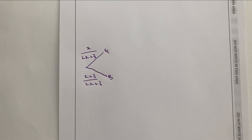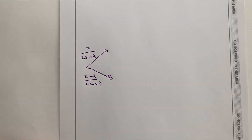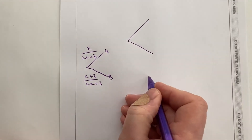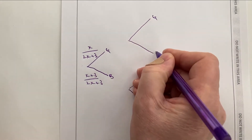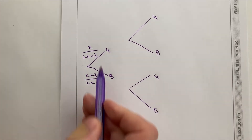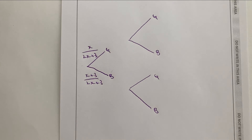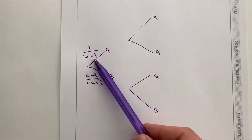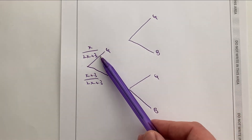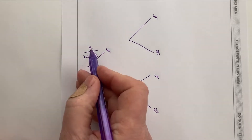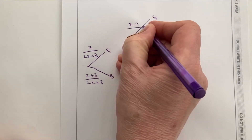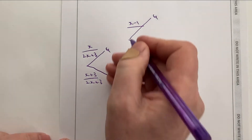Simon is going to take at random two pens from the box. The first pick is shown on the left of the tree, and these are going to be the second pick. So let's say the first time round he picks a green pen. If he picks a green pen, the second time around there's going to be one less green pen, so it's going to be X minus one over 2X plus two — that's one less pen in the box.